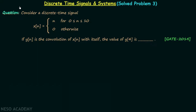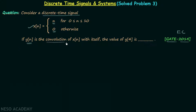We are going to solve one numerical answer type question in this lecture. The question is taken from GATE 2014 Electronics and Communication paper. We need to consider a discrete time signal xn which is equal to n when n is less than or equal to 10 and greater than or equal to 0, and xn is equal to 0 for all other values of n. If yn is the convolution of xn with itself, find the value of y4.